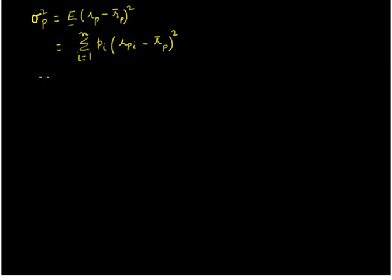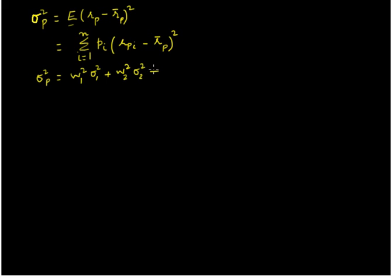The second formula that my students bring to me is this: the variance of a two-asset portfolio can also be written as w1 squared — where w1 is the proportion of money invested in asset 1 — times the variance of asset 1's returns, plus w2 squared — where w2 is the proportion of money invested in the second asset — times the variance of returns of the second asset, plus 2 times w1 times w2 times the covariance between asset 1 and asset 2.